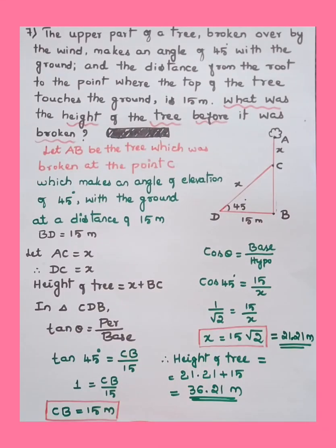We shall solve another problem related to heights and distance. The upper part of a tree broken over by the wind makes an angle of 45 degrees with the ground, and the distance from the root to the point where the top of the tree touches the ground is 15 meters. What was the height of the tree before it was broken?